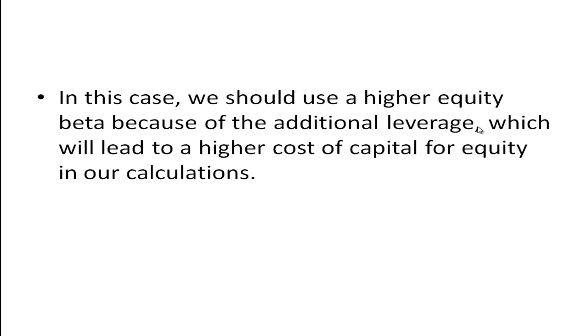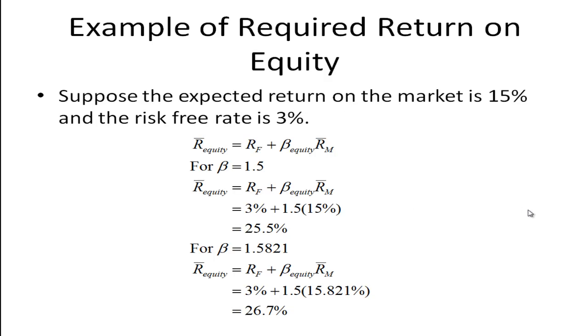There's more financial risk for our project because we're using more leverage than the other firm. And in this case, if we don't do that leveraging, we'll be using too low a beta, and we should be using a higher beta, which will lead to a higher cost of capital. And keep that in mind. If we use too low a cost of equity capital, we're going to perhaps accept a project that really isn't desirable.